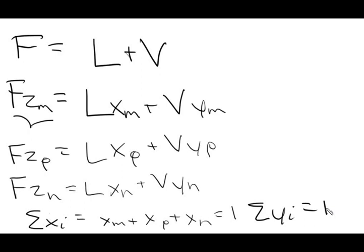We actually can't solve this system as-is; we need to simplify it further using the equation Y_i = K_i · X_i. K is a constant that relates the liquid composition of a species to the vapor composition when the liquid and vapor are in equilibrium, which in this case they are. At a set temperature and pressure, each species has a K constant. These values have been found experimentally and compiled into the DePriester charts, so we can find K values for each species at the specified pressure and temperature.